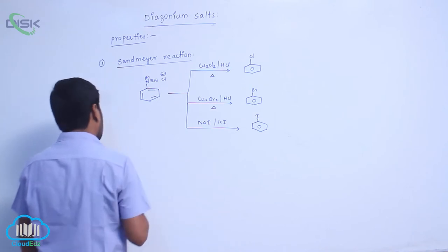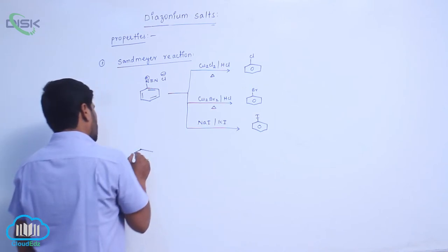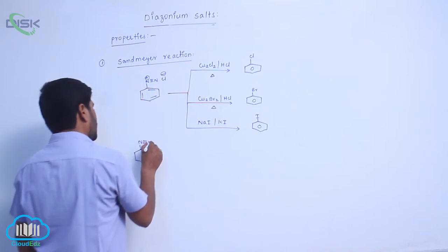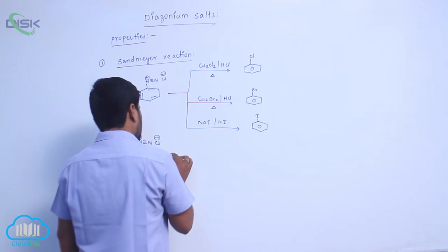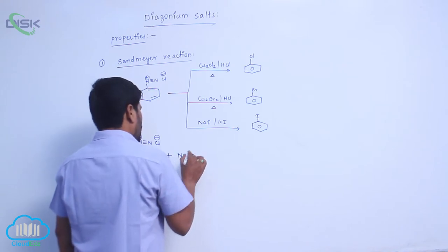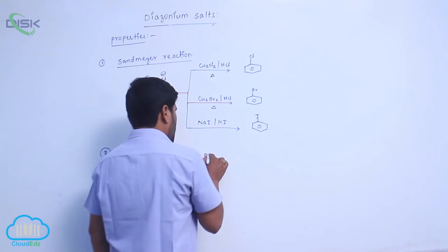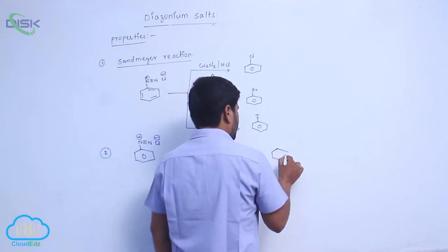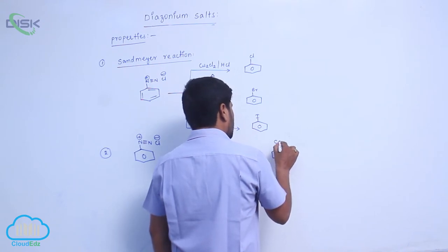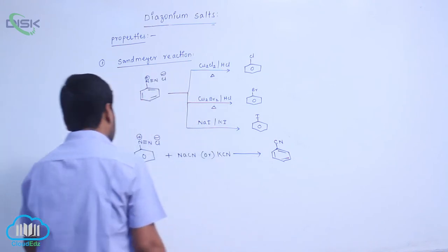When benzene diazonium chloride reacts with sodium cyanide or potassium cyanide to form cyanobenzene.